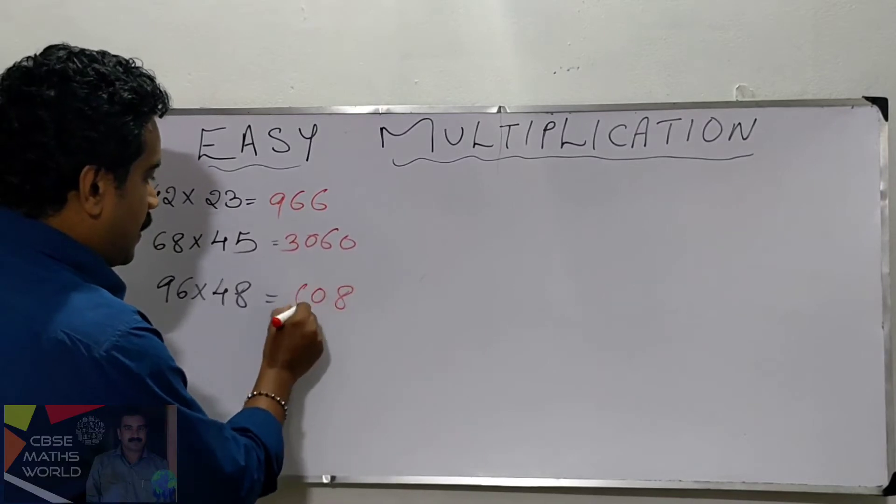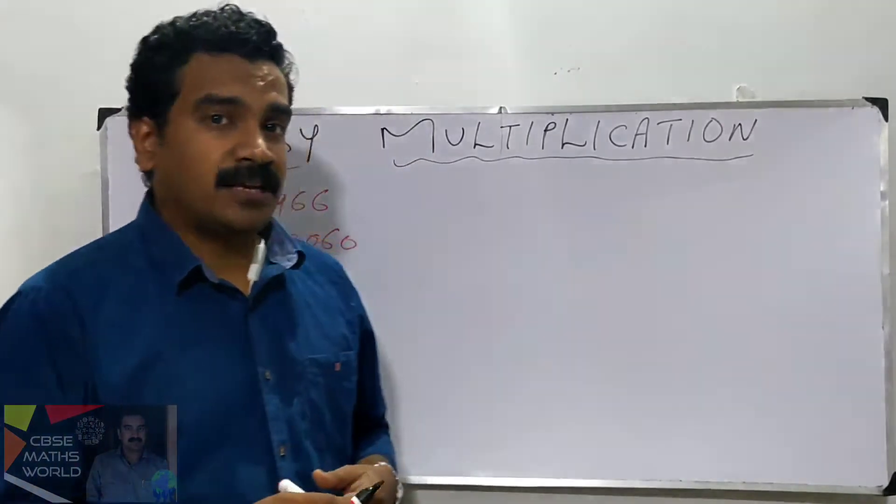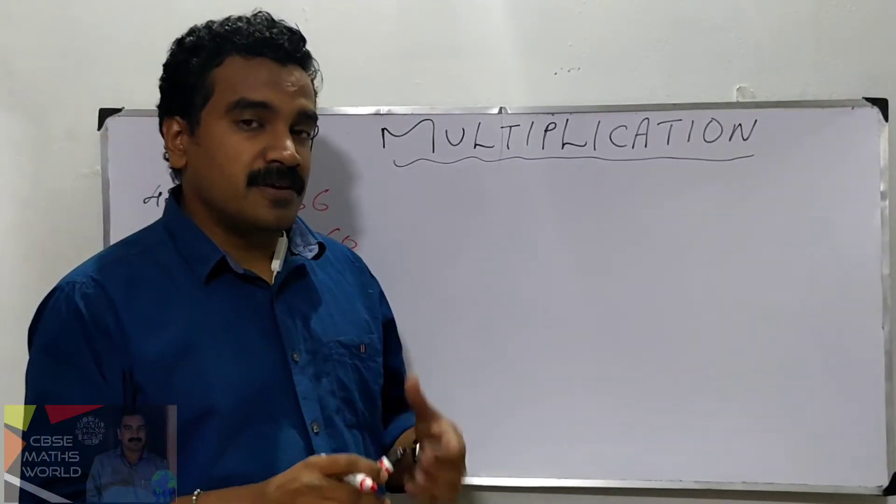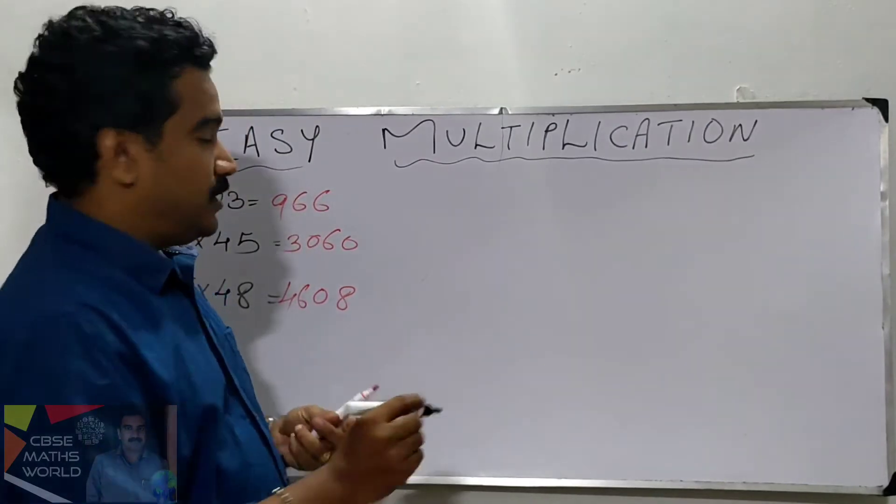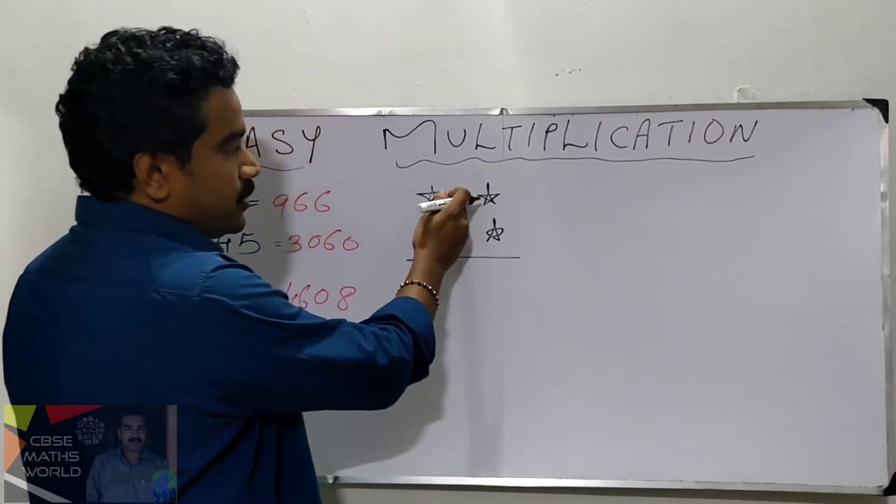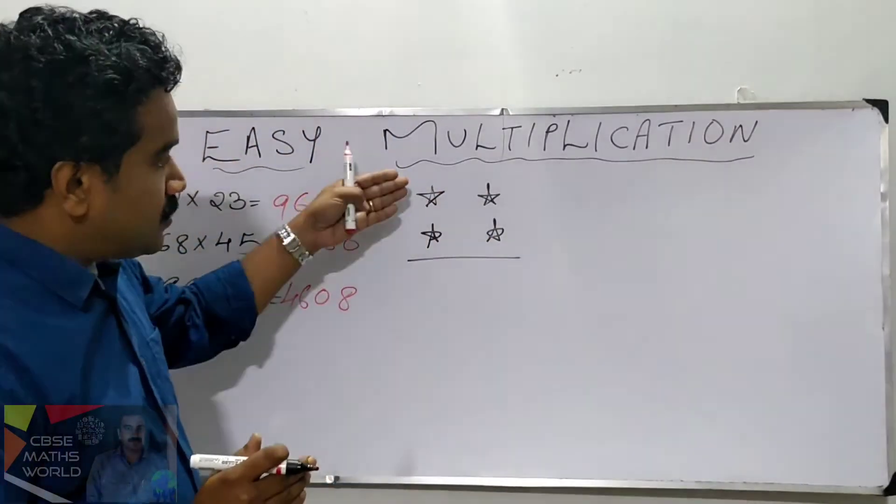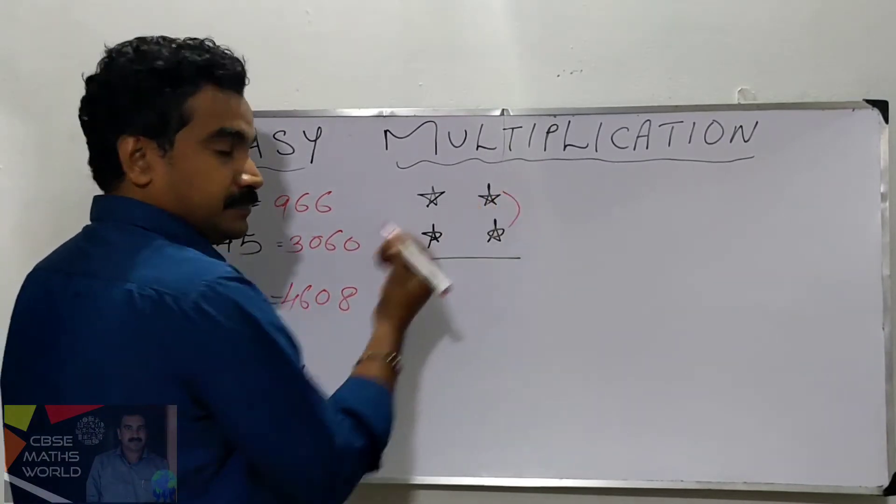You know how I solved this? The technique, how I solved this problem, is very easy. It's a very easy technique. The method we are solving here is for two-digit numbers. This is a two-digit number and this is a two-digit number.